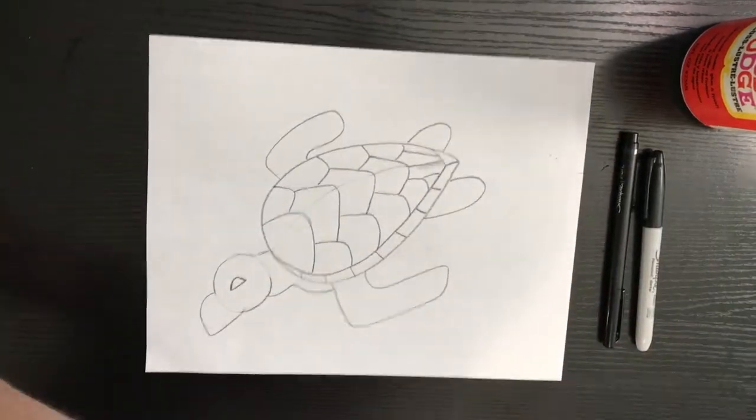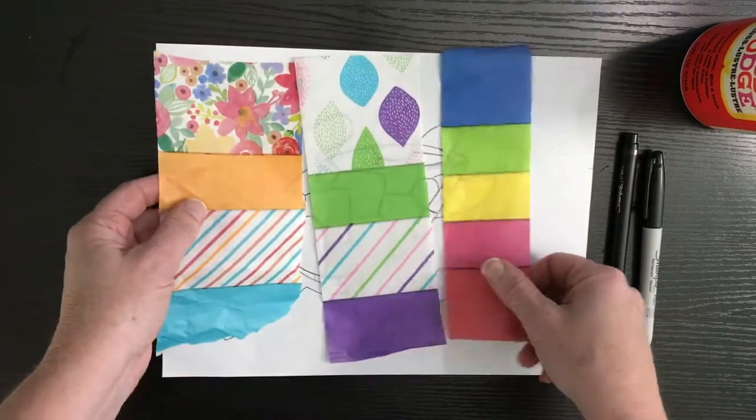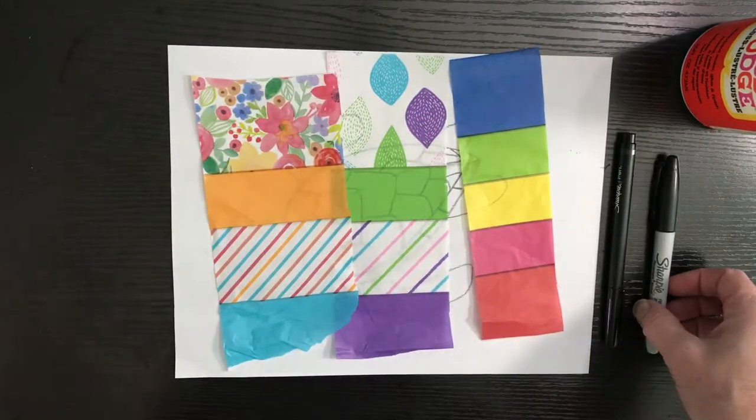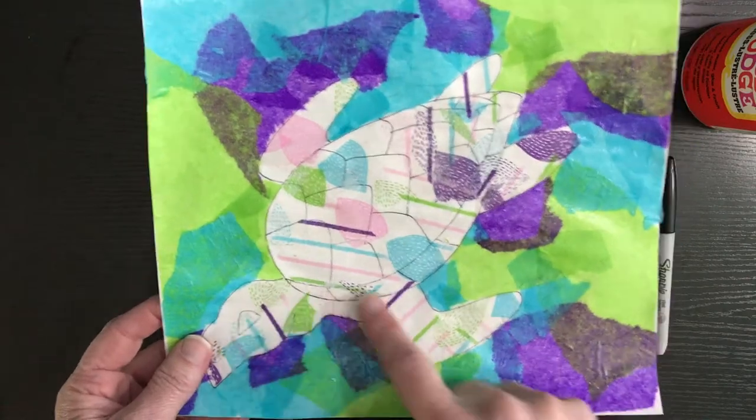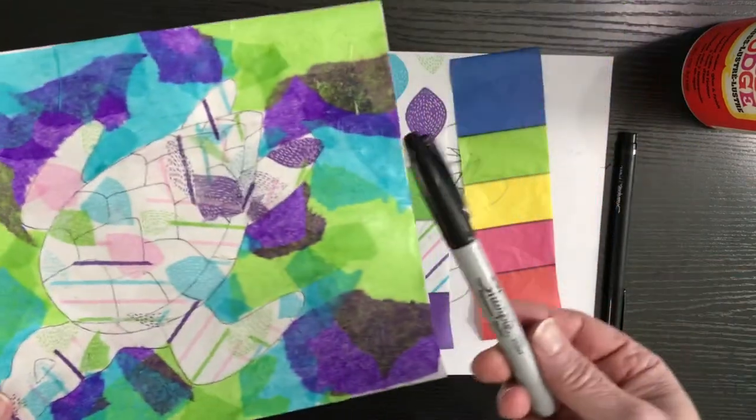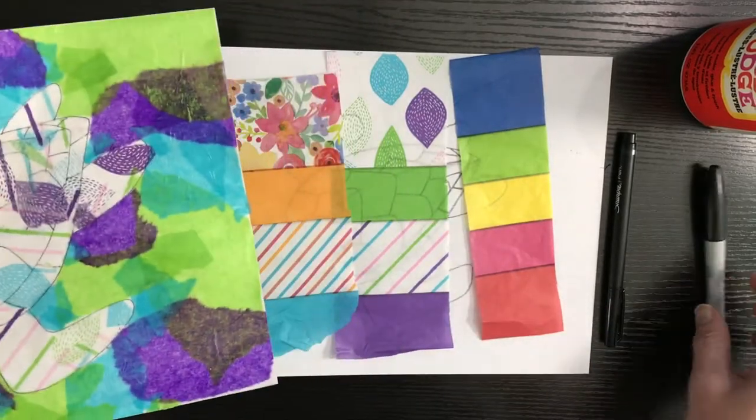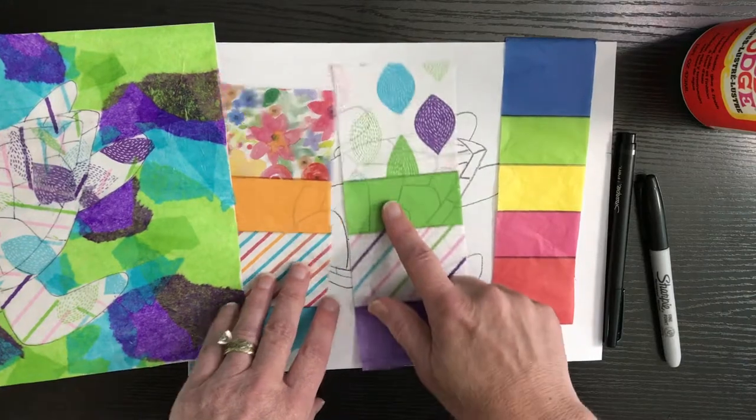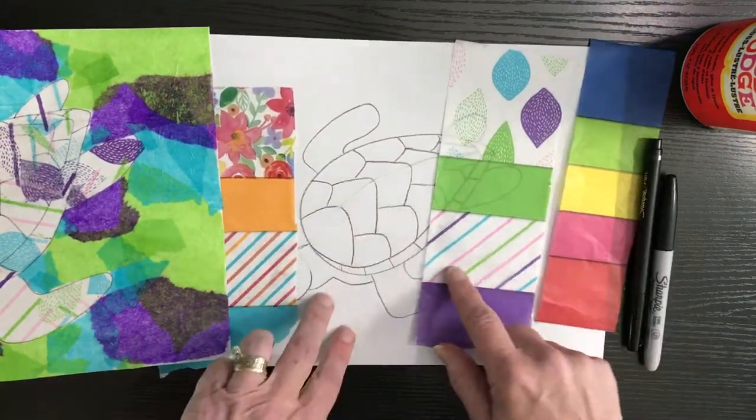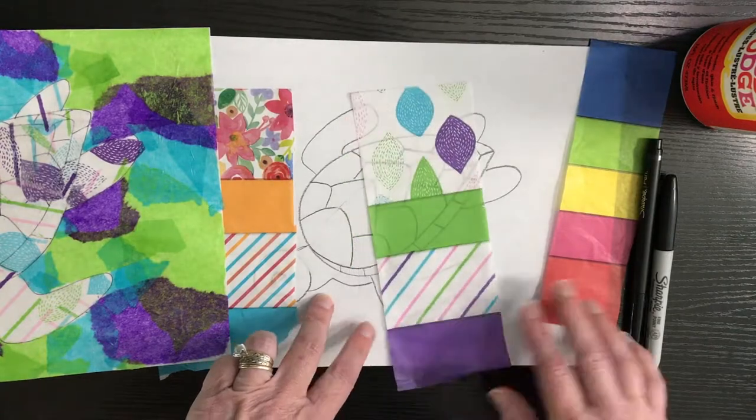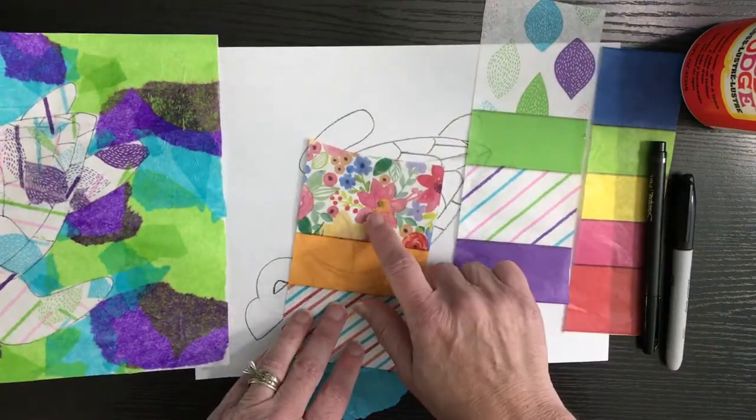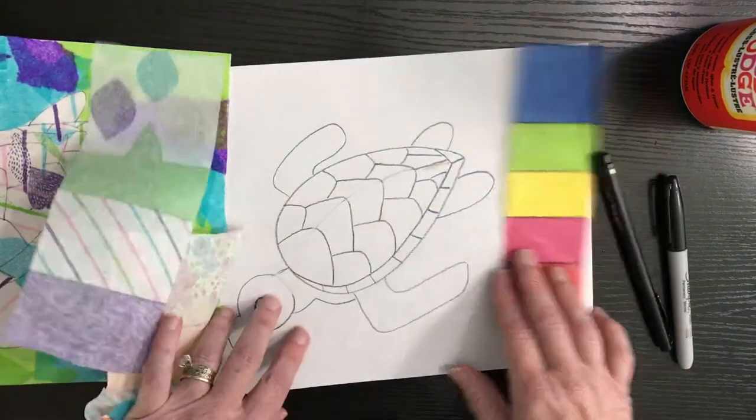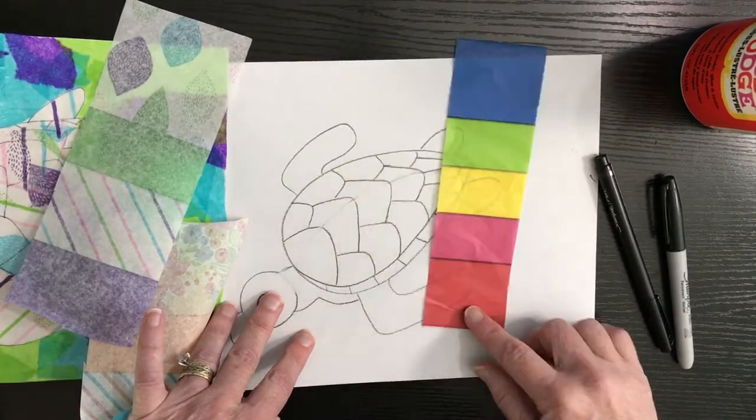If you were to use a pattern that was very busy, in order to see the turtle through the tissue paper collage that you do, you would have to use a thicker sharpie. So depending on which tissue paper you use, see how you can see through this? This is what the thin sharpie would be. See how you can see the turtle through here? You can use that. Here, see how you can't see it there? You'd have to use a thicker sharpie. So depending on which colors you use, you will sharpie your turtle.